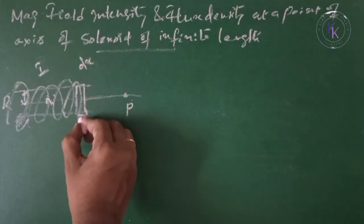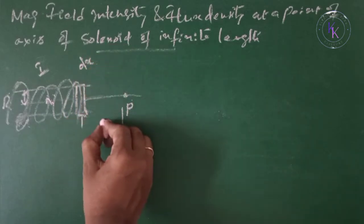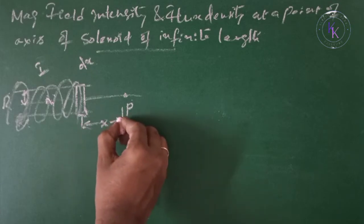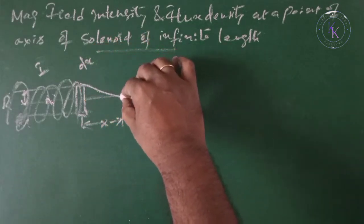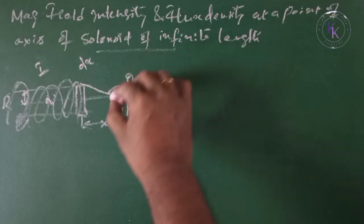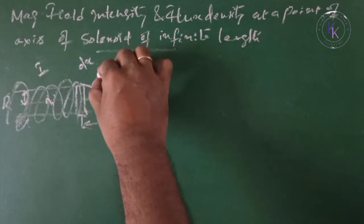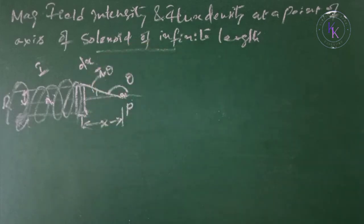Then the length between these two is x. The angle which is making from the point P, let this be theta, then this will be pi minus theta. Now we need to find out the field intensity and flux density at the point P.